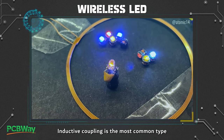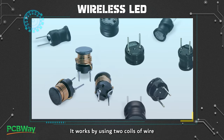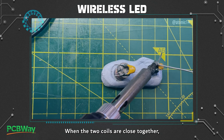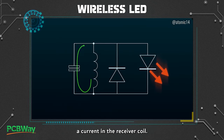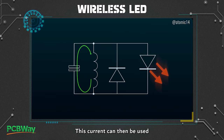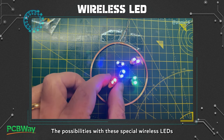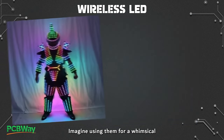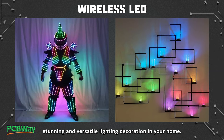Inductive coupling is the most common type of wireless power transmission for LED lights. It works by using two coils of wire to create a magnetic field. When the two coils are close together, the magnetic field induces a current in the receiver coil, which can then be used to power the LED lights. The possibilities with these special wireless LEDs are virtually limitless — imagine using them for a whimsical cosplay outfit or for stunning lighting decoration in your home.